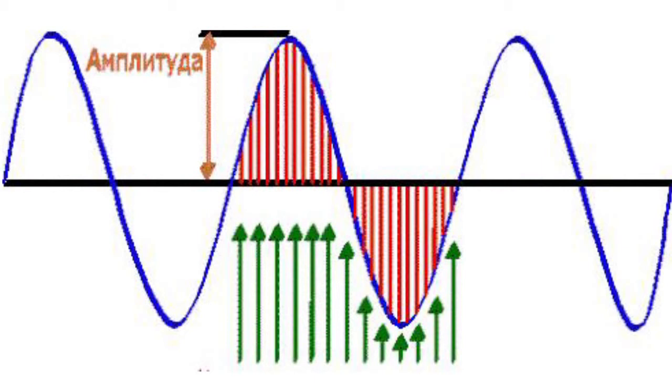In order to transform an analog signal into a digital code, an ADC measures the amplitude of an analog signal at strictly defined intervals. The intervals are defined in such a way that the sampling rate could be twice as high as the high-frequency component of the measuring signal.